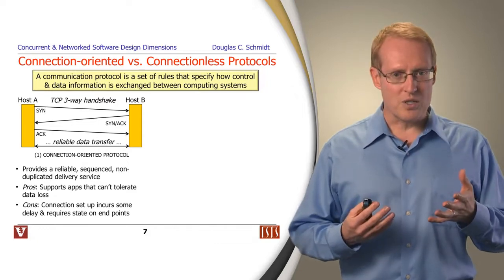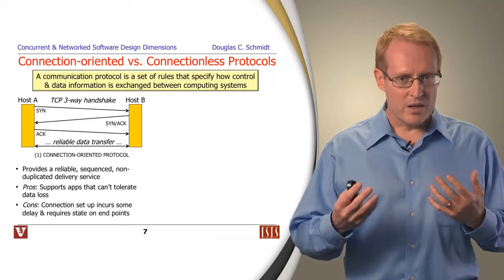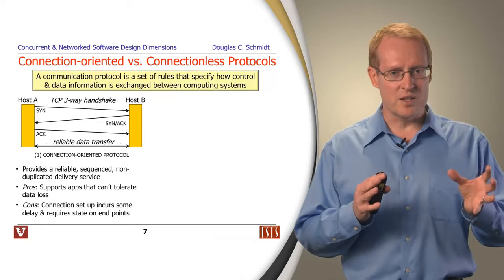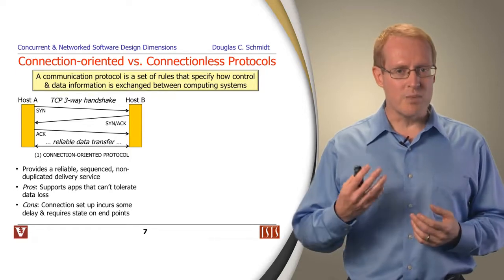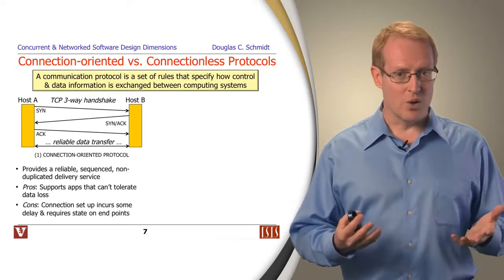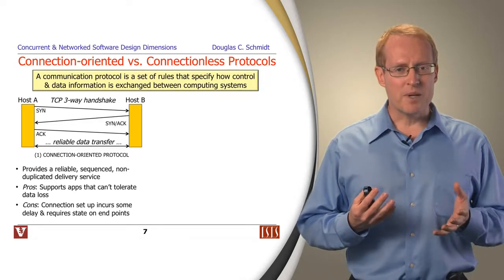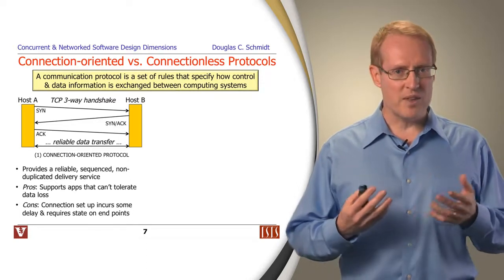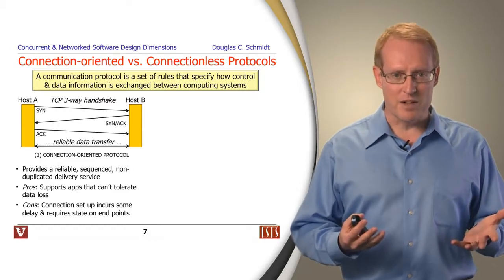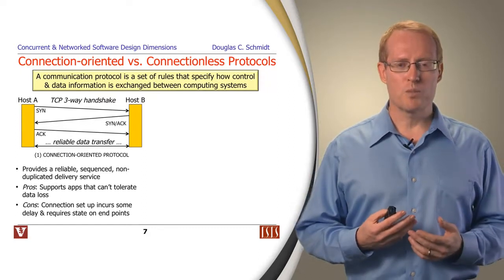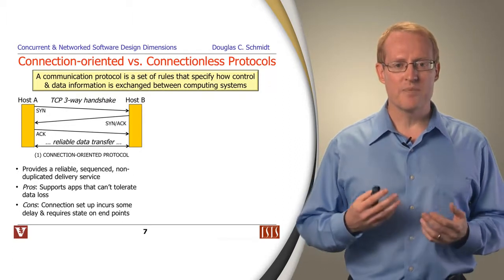Typically, these connection-oriented protocols have an initialization phase where there's some handshaking that takes place, where you communicate your intent to exchange messages between the sender and the receiver. This typically involves setting up some state information at both endpoints so you can keep track of what's been delivered and what hasn't. The good thing about connection-oriented protocols is that for applications that can't tolerate data loss, they make things much easier for upper-level services and applications to leverage. A good example of a protocol that works this way is the TCP protocol, which provides you with reliable, sequenced, and non-duplicated delivery.